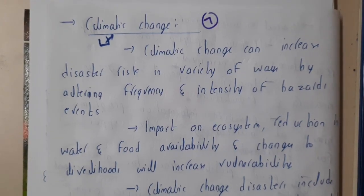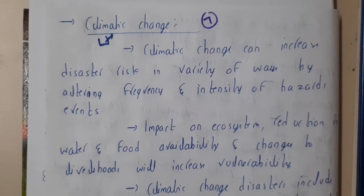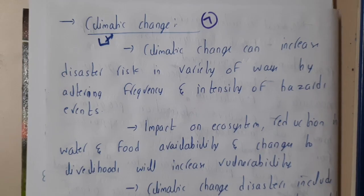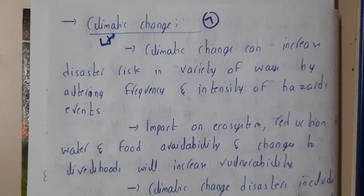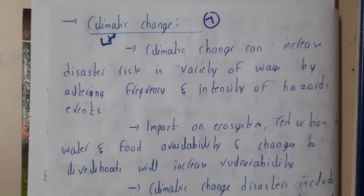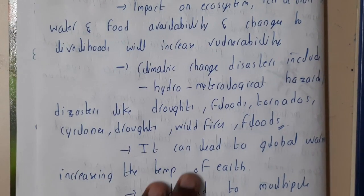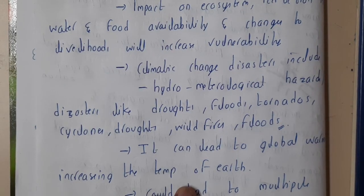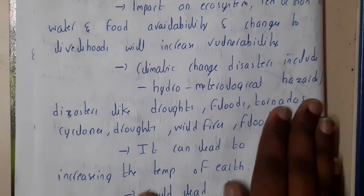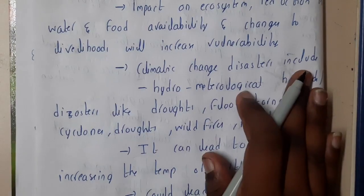Hello guys, we are back with our next lecture. In this lecture, let us go through the concept of climatic changes. Most of the disasters — at least a few — completely depend on climate. The best examples are floods and droughts, which are common disasters that are completely dependent on climatic conditions. We'll be discussing them in this lecture as an introduction.